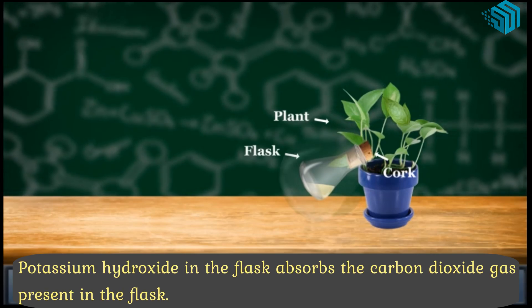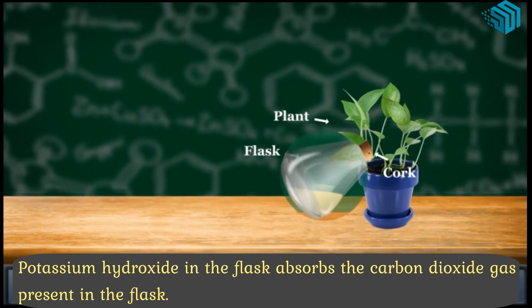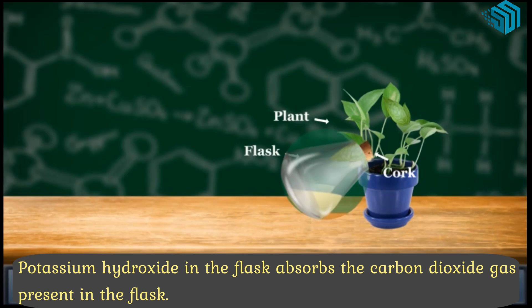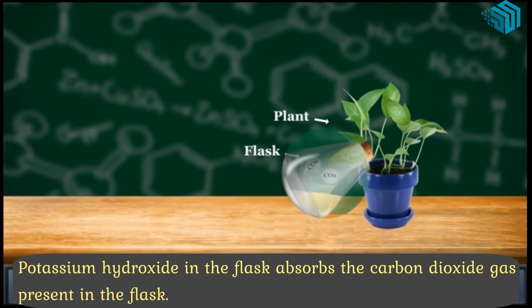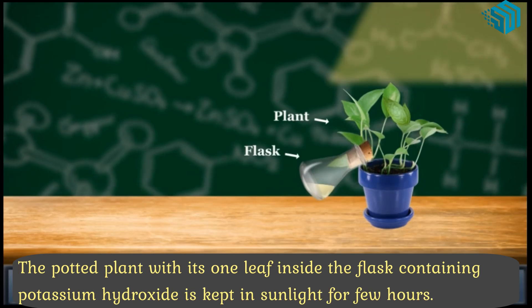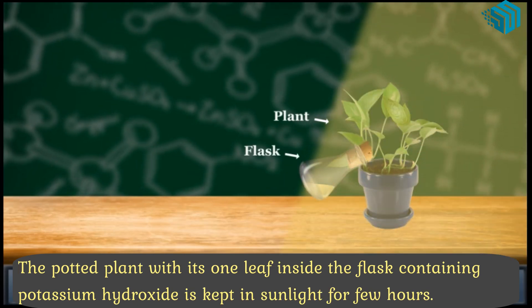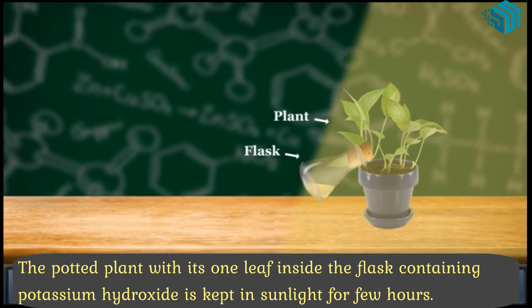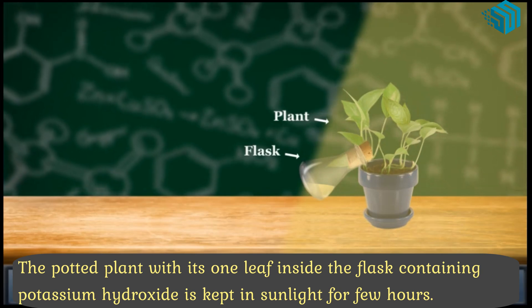Potassium hydroxide in the flask absorbs the carbon dioxide gas present in the flask. The potted plant with its one leaf inside the flask containing potassium hydroxide is kept in sunlight for a few hours.